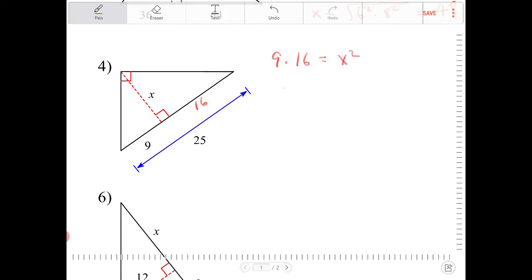And again, this looks pretty intimidating, but when I take the square root of 9 times 16, that's the same thing as 3 squared times 4 squared. And that's the same thing as 3 times 4, which is 12.